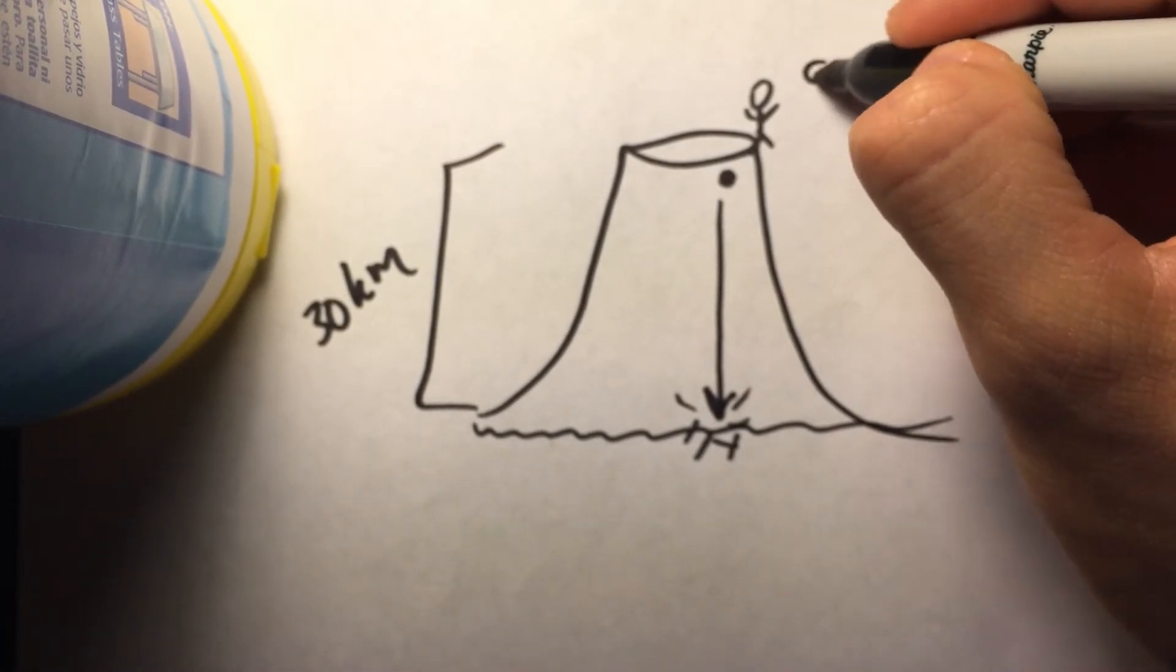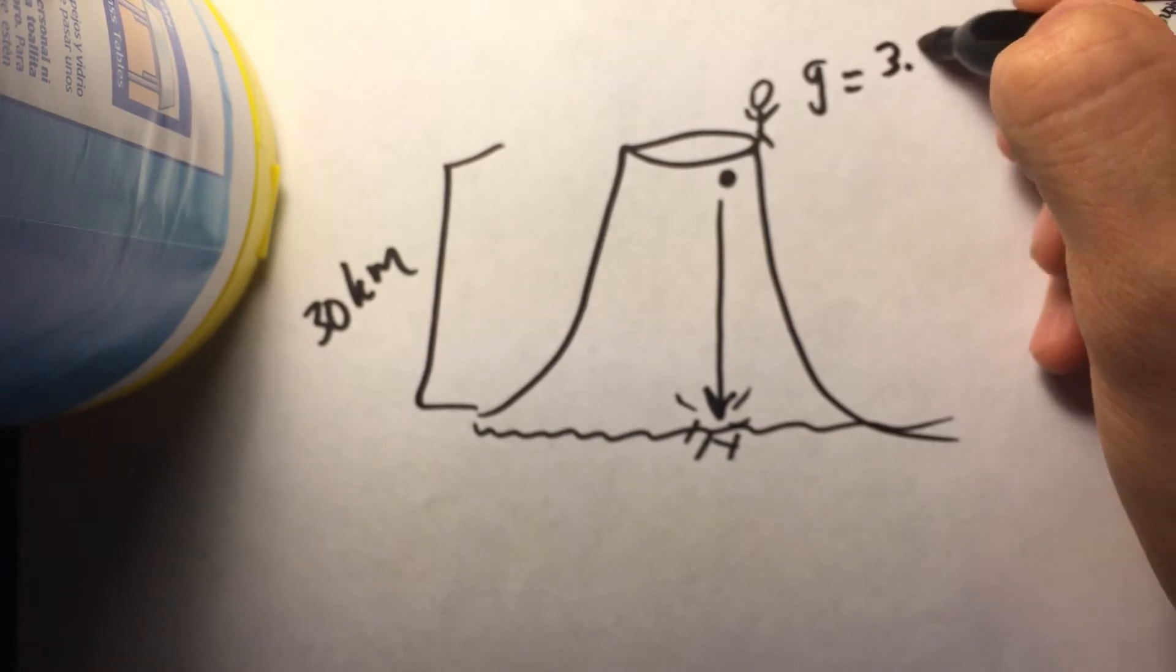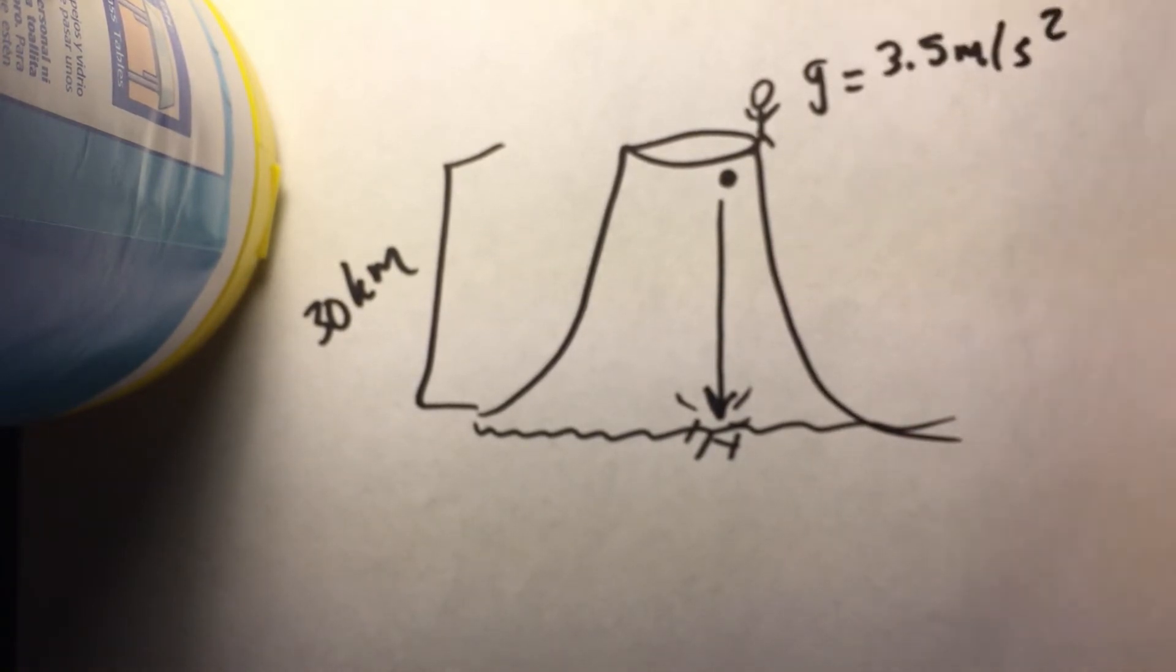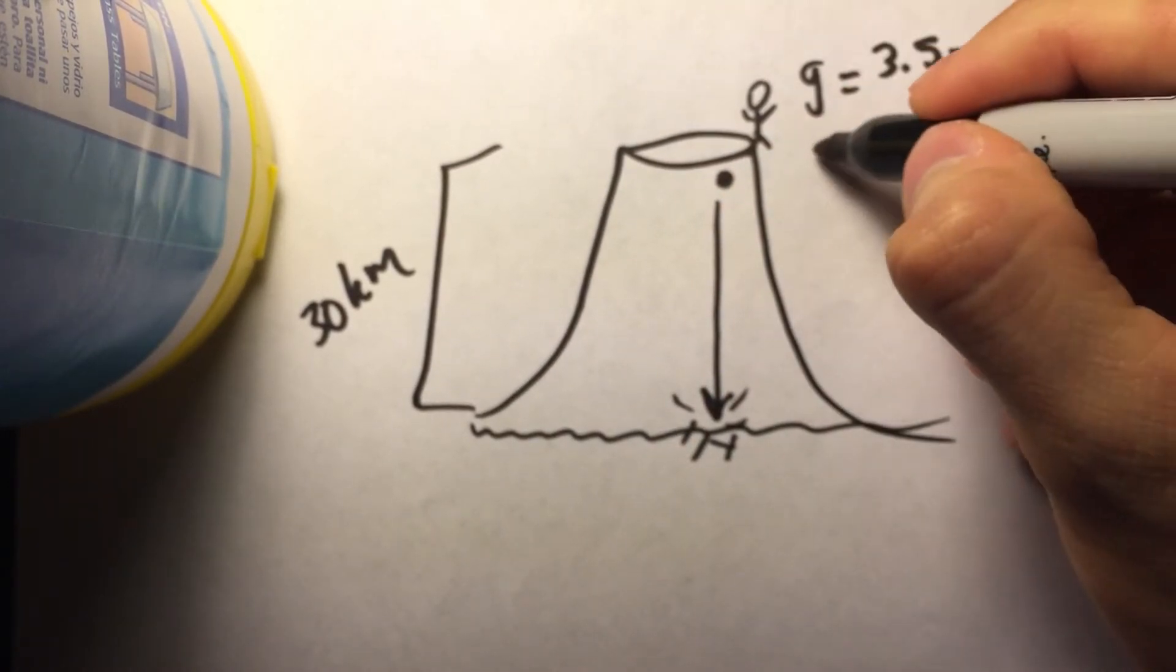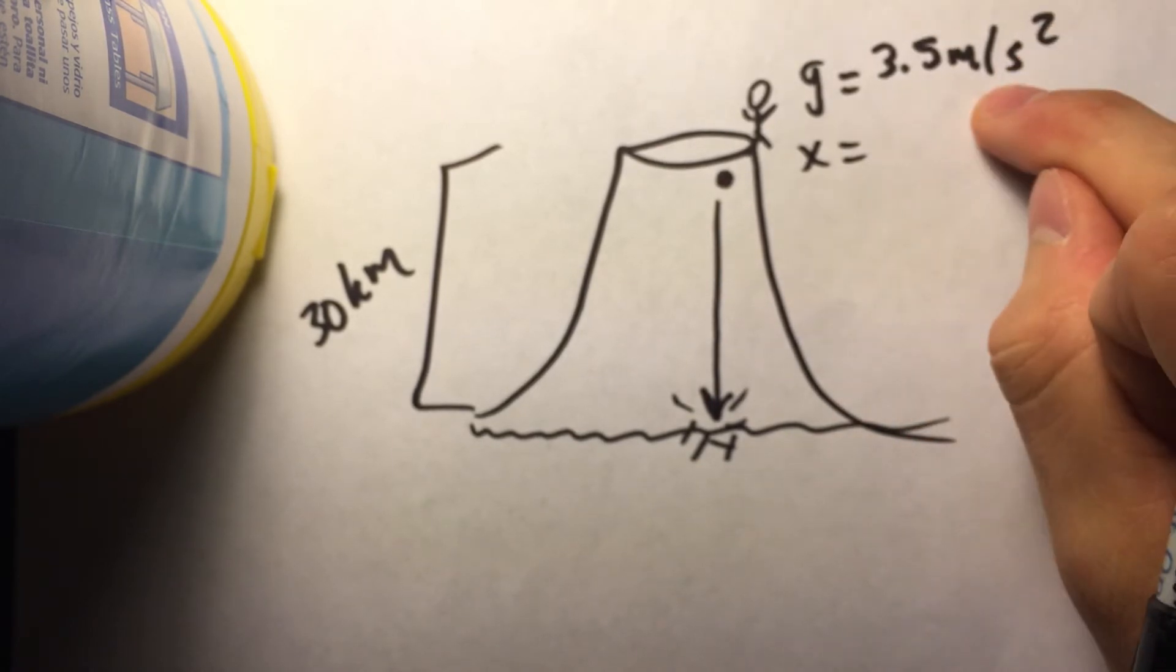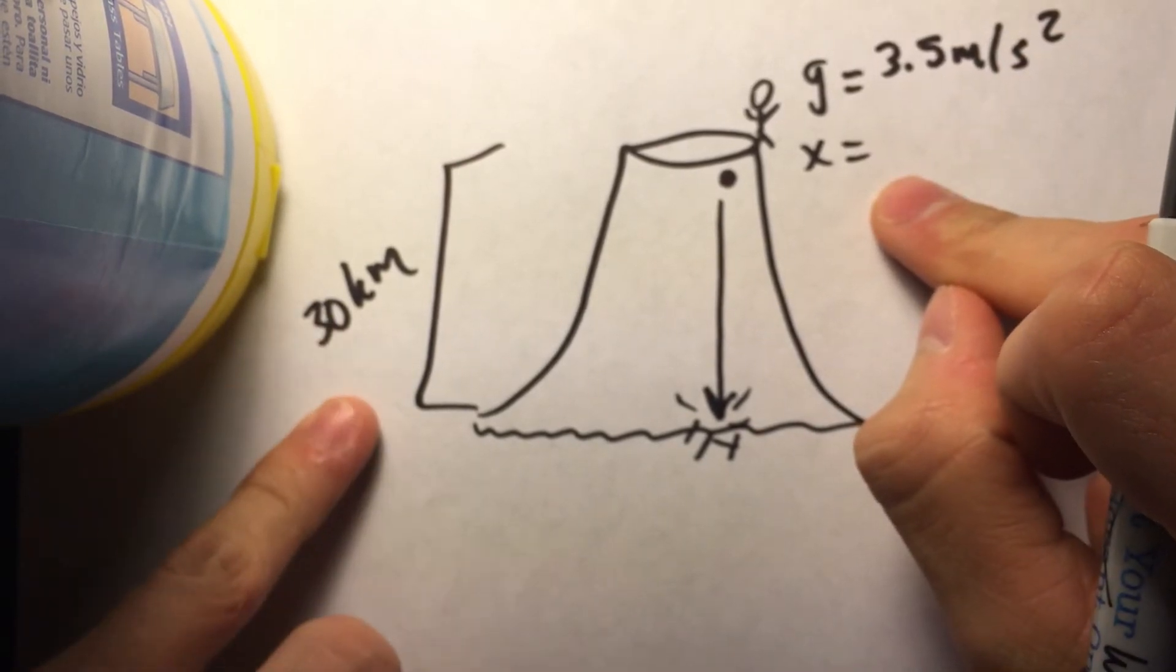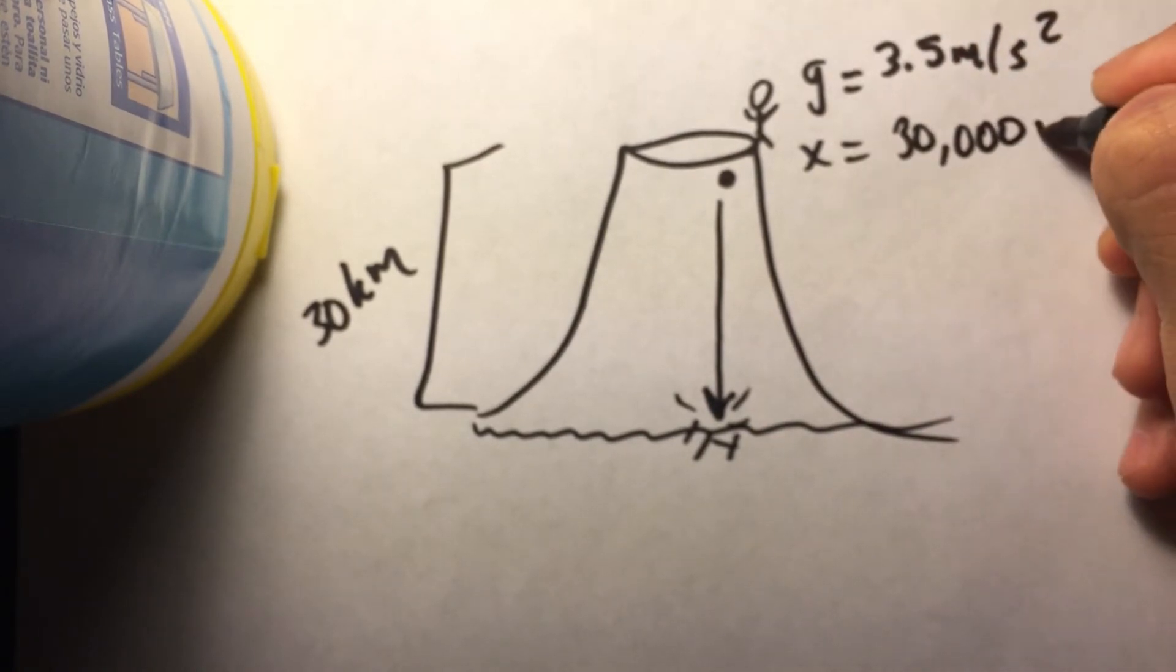They also give us a g, in this case, of 3.5 meters per second squared. So we always want to write our variables on the side. So we've got an x of 30 kilometers. Because gravity is in 3.5 meters per second, we want to convert our kilometers into meters. In this case, we have 30,000 meters.